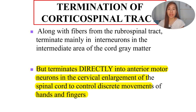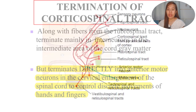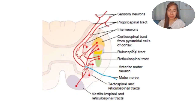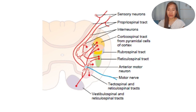Some fibers already directly terminate in the anterior motor neuron, specifically at the cervical enlargement - these are for control of movements of the hands and fingers. Looking at the spinal cord, we have the anterior motor neuron. For the lateral corticospinal tract, this is where they terminate - the corticospinal tract from pyramidal cells of the cortex.